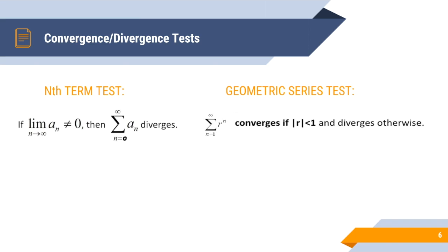To review some of the tests for convergence and divergence: the nth term test — you take the limit of the function as n approaches infinity. If it's any finite positive value but 0, then the function diverges. If the limit equals 0, it still does not prove convergence, so you have to do another test. For the geometric series test, if the absolute value of r is less than 1, it converges, and if it's anything greater than 1, it diverges.